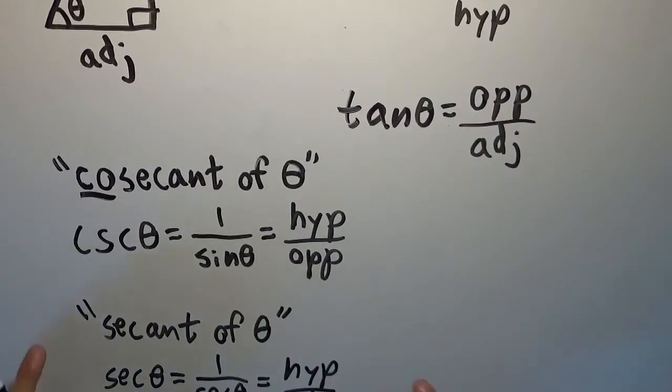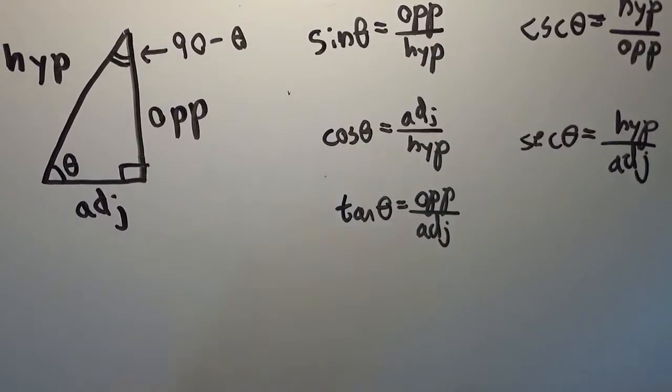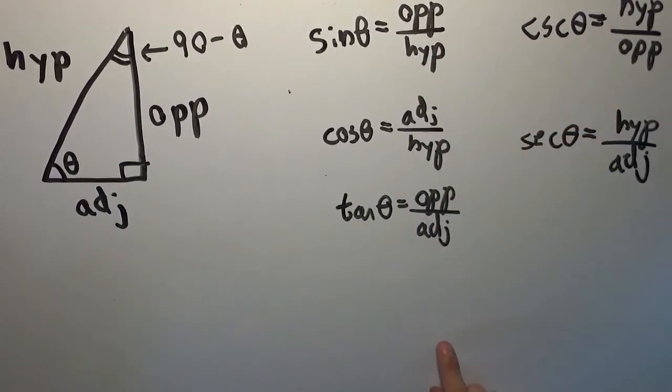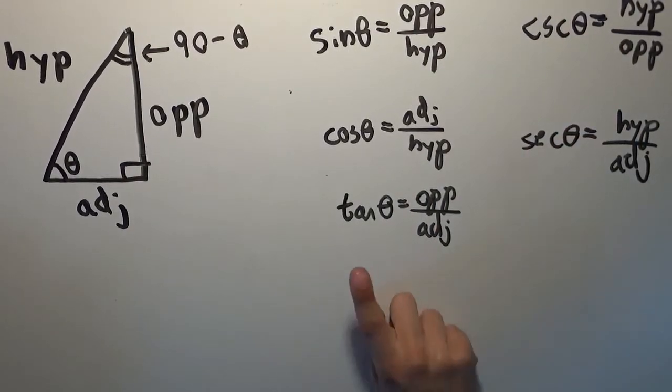Alright, so I'm going to put these up here, and then we're going to do our last derivation here. Okay, so now we've got five trigonometric functions, and we've only got one left to do. And we're going to define it from the tangent.